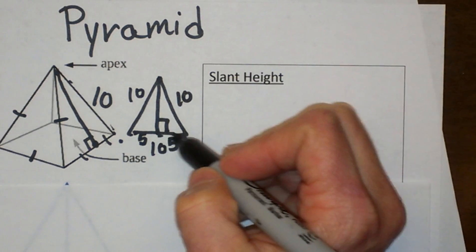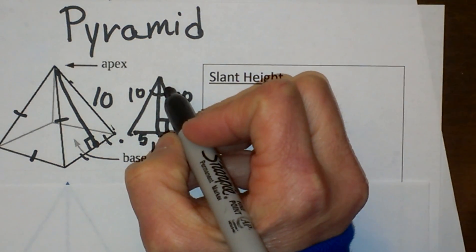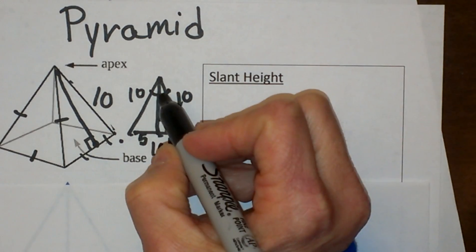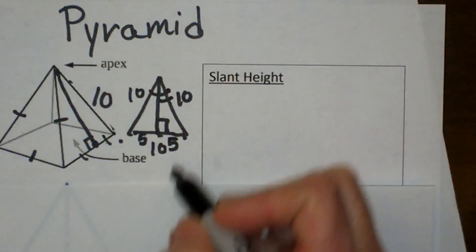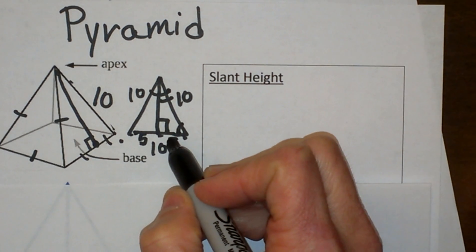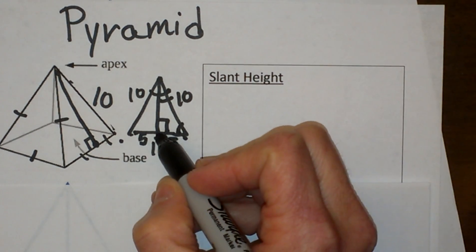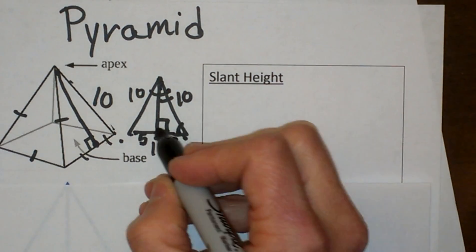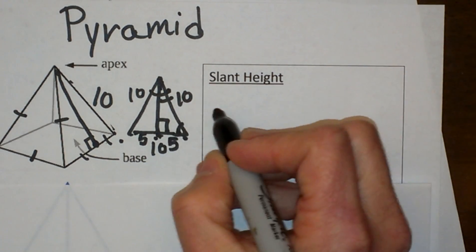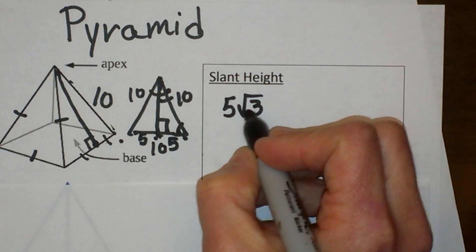And then I am working with a 30-60-90 right triangle. So I have a 30-60-90 where the 60 degree angle is up here but I have cut it in half to 30. There is a 60 degree angle over here and so I have a 30-60-90. And the rules for 30-60-90 say if I take the short leg and I multiply by the square root of 3 I have the altitude which is our slant height. So that means the slant height is going to be 5 square root 3.